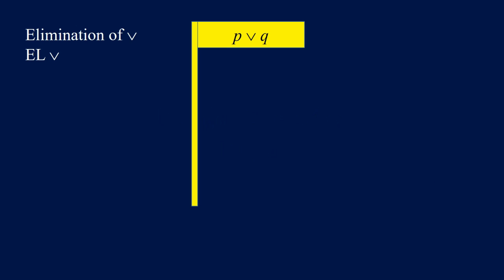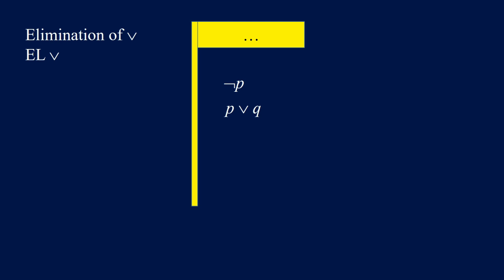Elimination of OR — we're going to use L OR for reasoning. If we have P or Q in the flag or under the flag, and we have not P, then we can conclude Q. Similarly, if we have not P in the flag or under the flag, and we have P or Q under the flag, then we can conclude Q. This is also called the rule of disjunctive syllogism.